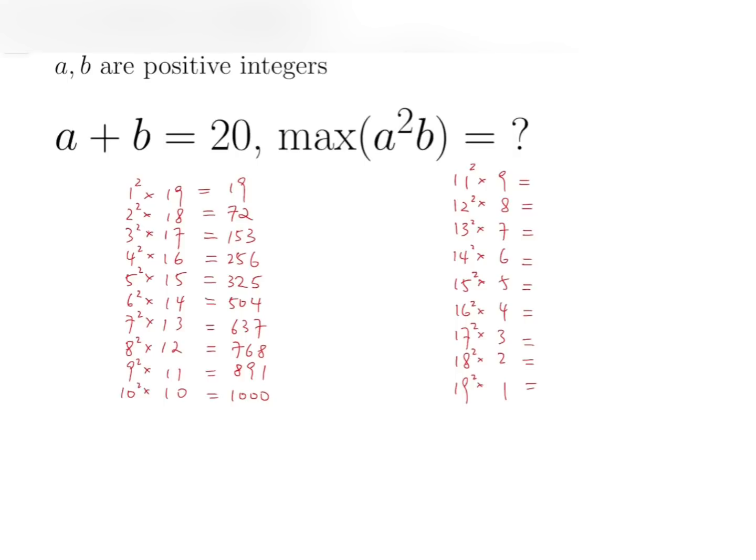If a keeps going larger, 11 squared times 9 is 1089. For 12 squared is 144, and multiplying by 8, we have 1152. 13 squared times 7 is 1183. Then 14 squared times 6 is 1176. Now you may notice that the number went up, and then starting from 14 squared times 6, it starts going down.